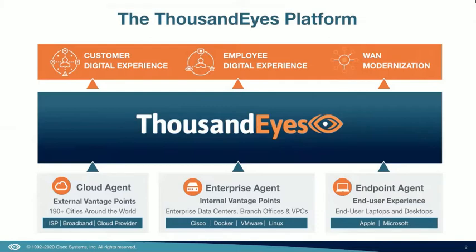The ThousandEyes solution is focused on three primary customer use cases. The first centers around customer digital experience — providing visibility into the customer's experience as they access services across the Internet. This includes visibility into the performance of the entire ecosystem that supports their digital delivery, including CDNs, DNS providers, as well as all the ISPs and service providers that collectively work together to deliver that service to customers.